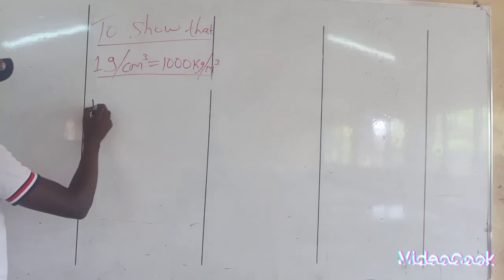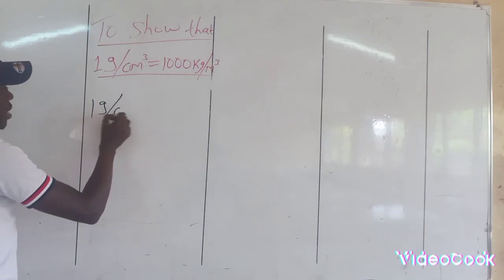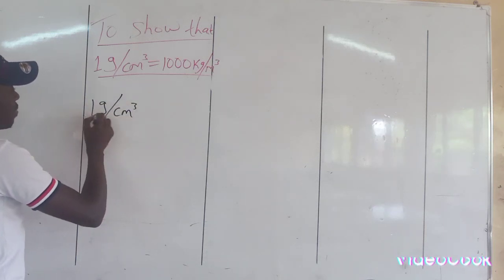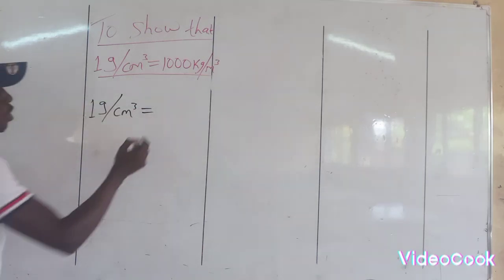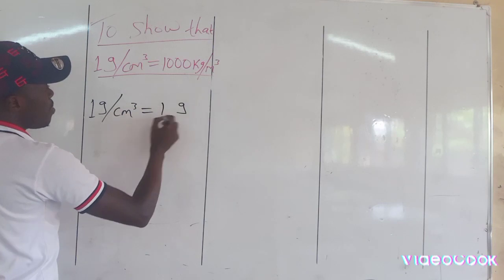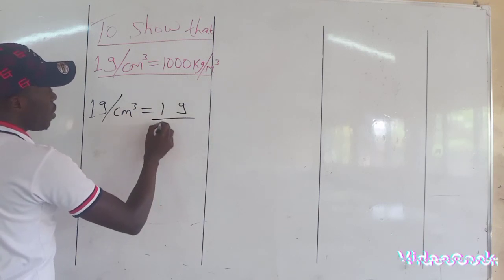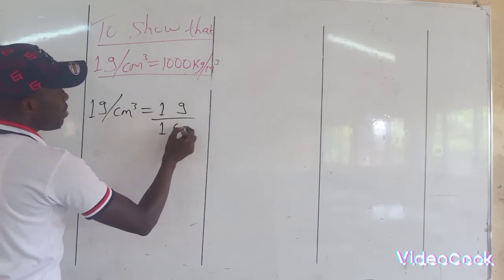We can start: 1 gram per cubic centimeter simply implies 1 gram divided by 1 centimeter cubed.